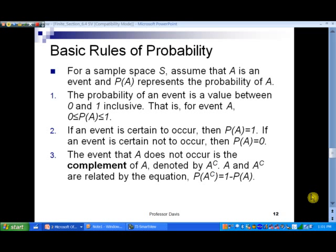The event that A does not occur is called the complement of A, and it's denoted by A with a superscript of C. And so notice how the complement of an event is related to the probability of its counterpart.